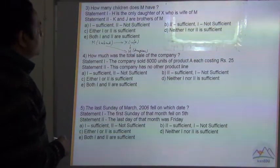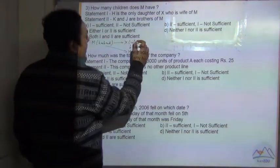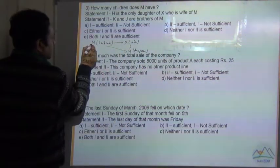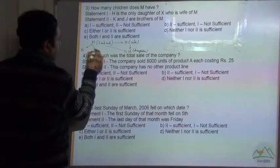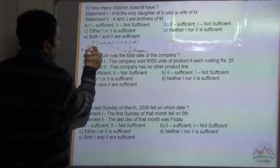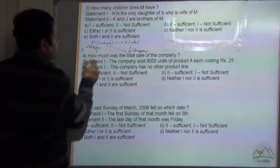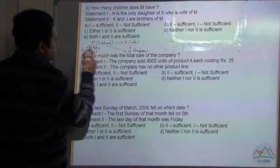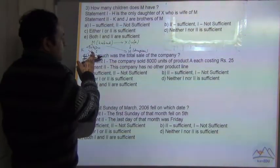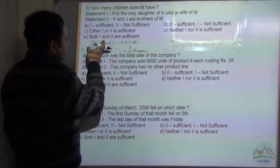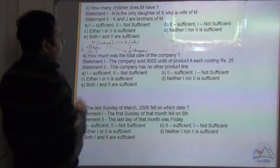Statement 2 says that K and J are brothers of M. This information is not required at all and does not give any information about the children. These are brother relationships.